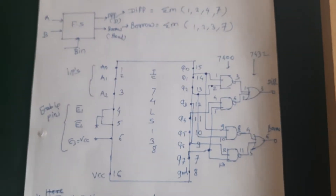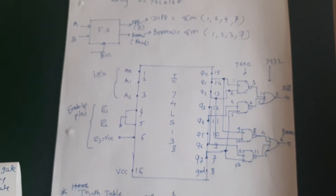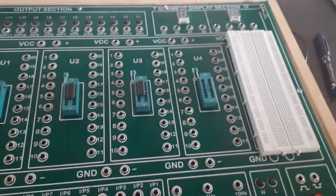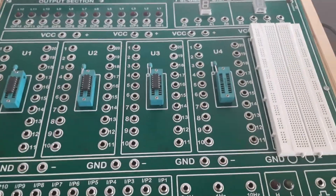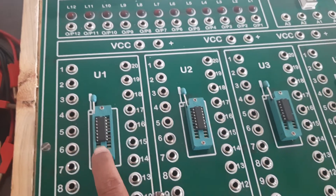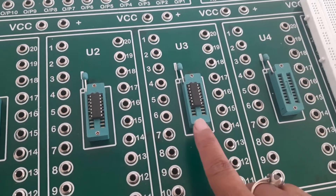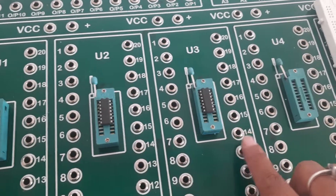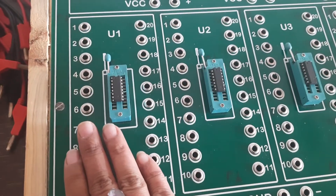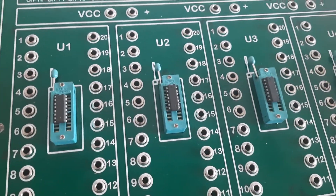Now we will see how to design this full subtractor using the IC digital trainer kit. I have already placed the ICs here. The first IC is 74138, the second is 7400, and the third is 7432. This is the 3-to-8 decoder IC, this is the NAND gate IC, and this is the OR gate IC.